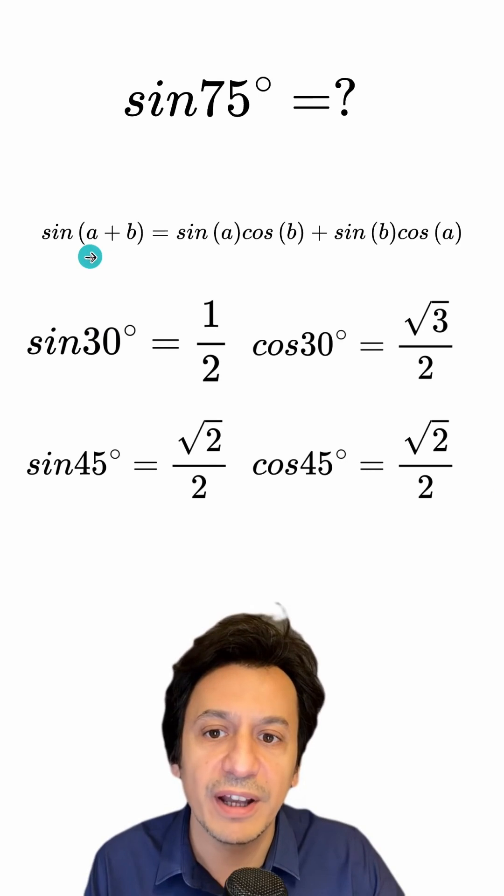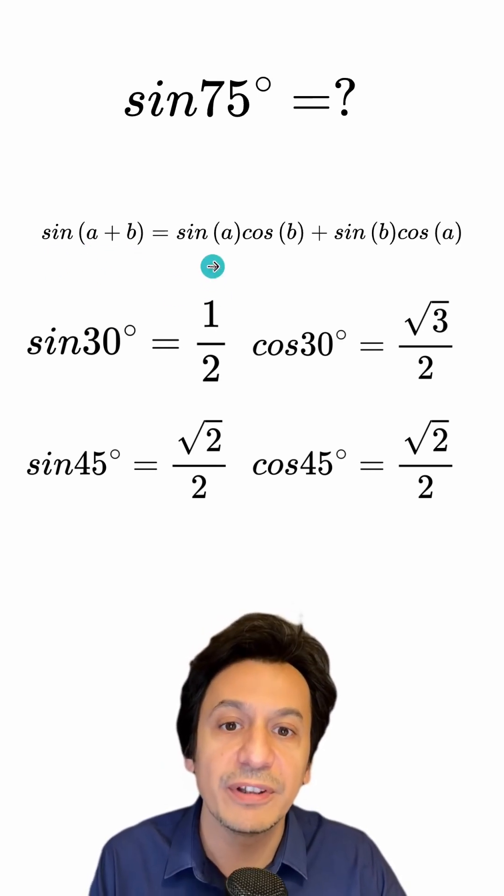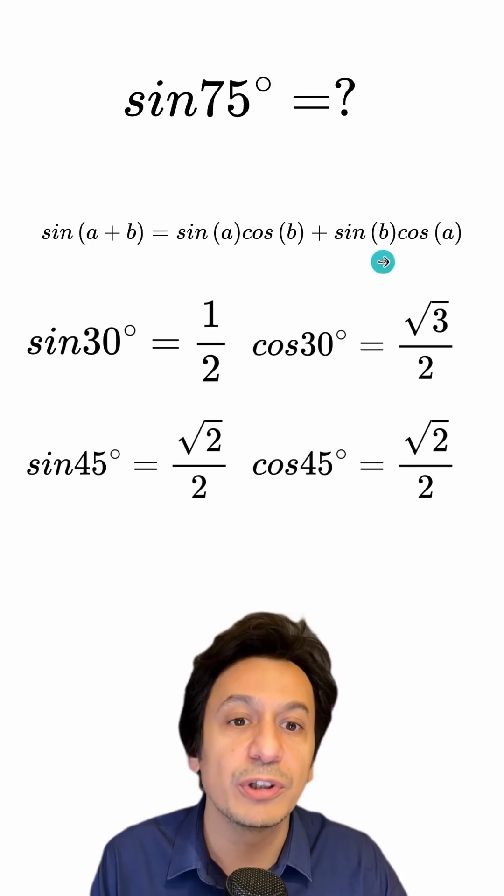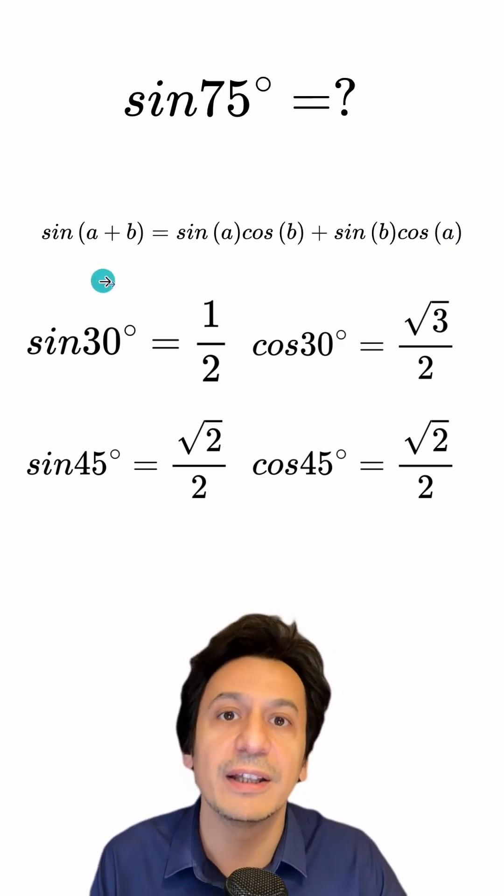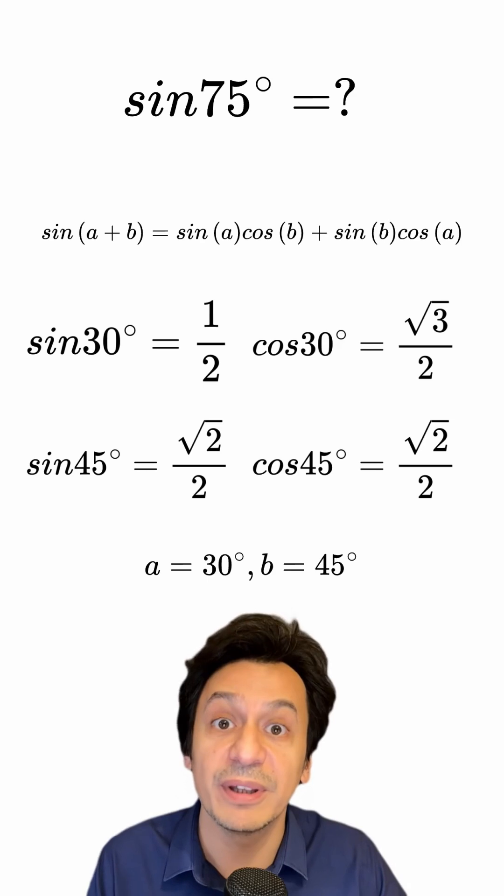Now if I substitute 30 for a and 45 for b here, I will have found sine 75. Since I also know sine 30, cosine 45, sine 45, and cosine 30 here, I can easily calculate the value of sine 75. So all I have to do is substitute 30 for a and 45 for b. Let's do that.